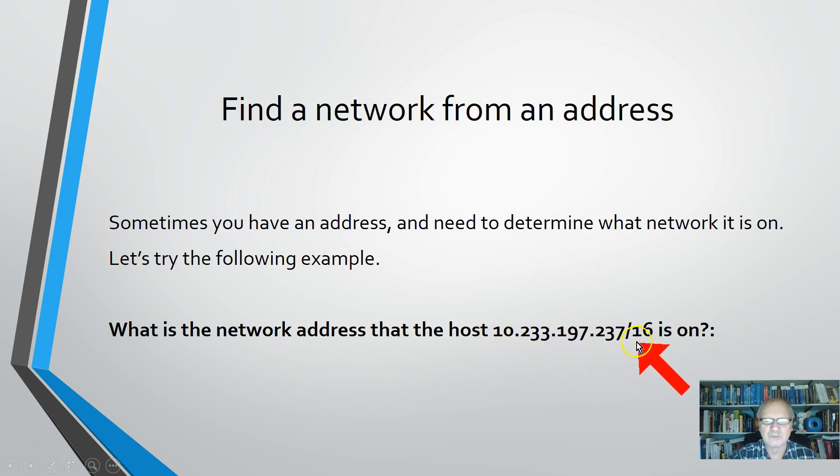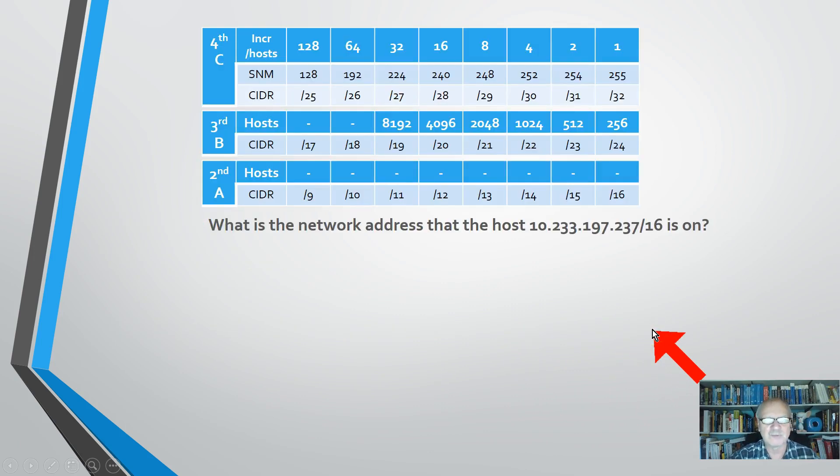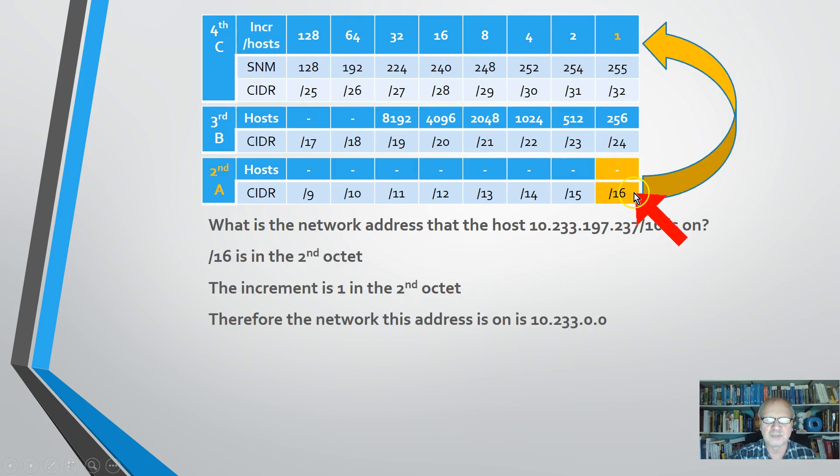So let's take a look at how we might do this. Here's my first example. What network is the host 10.233.197.237 slash 16 on? Well, let's take a look at how we might do that with our chart. We know that this is a slash 16, so we're going to be working in this place right here. And we know that that's the second octet and that the increments will be 1 in the second octet.